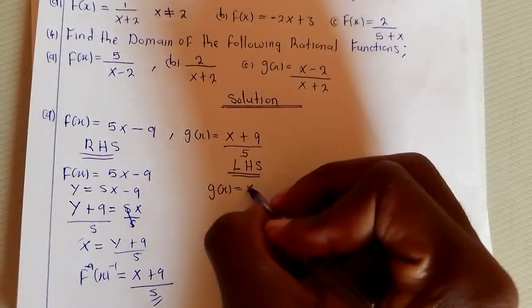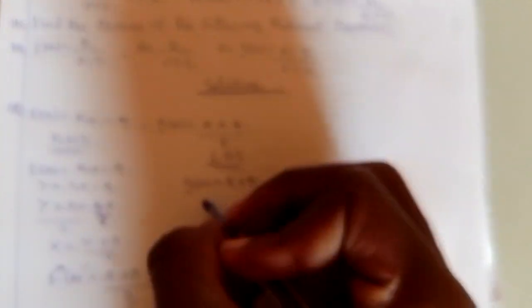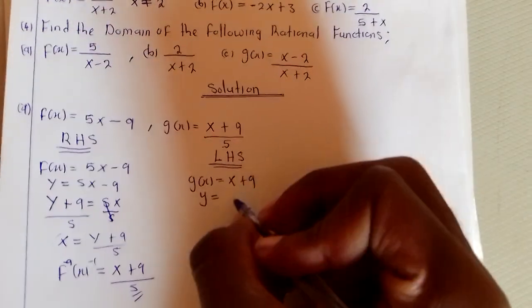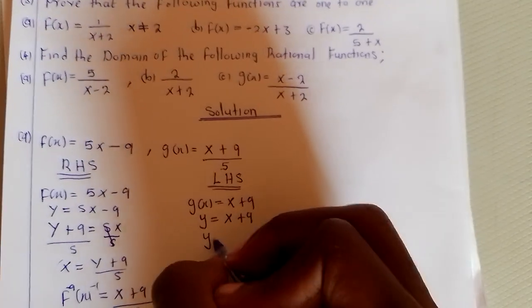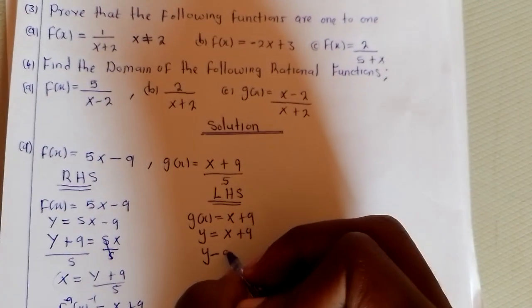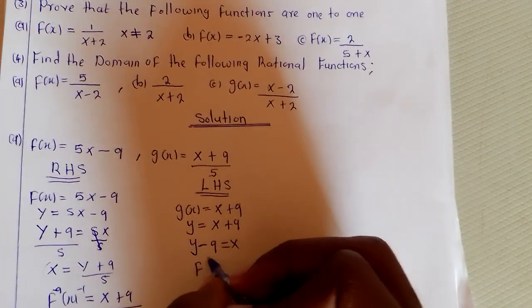Same concept, we have g(x) = (x + 9)/5. We replace g(x) with y: y = (x + 9)/5. We take the 9 to the other side and make x the subject.